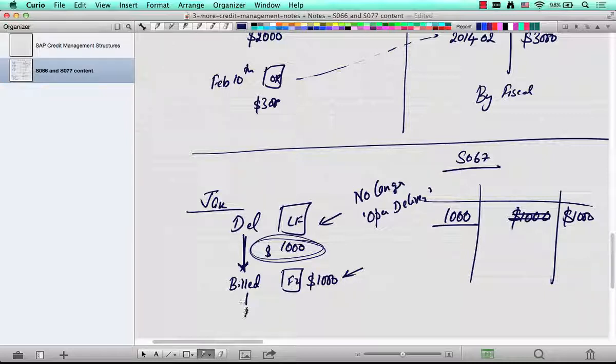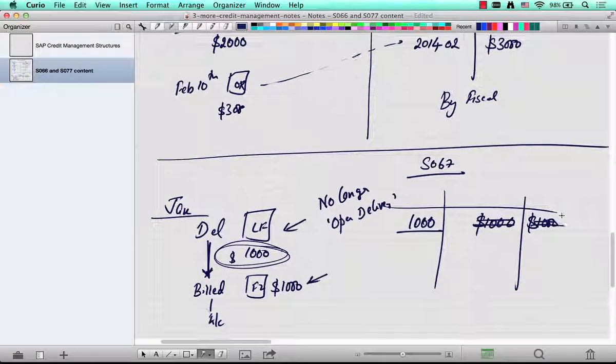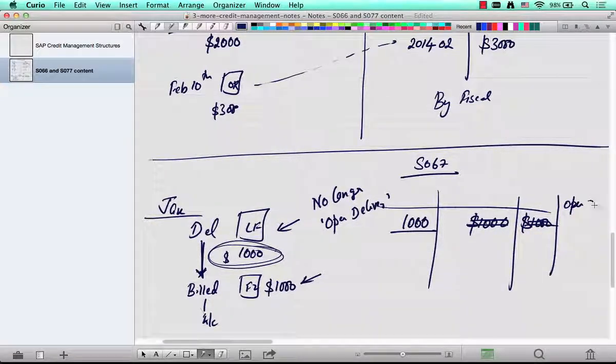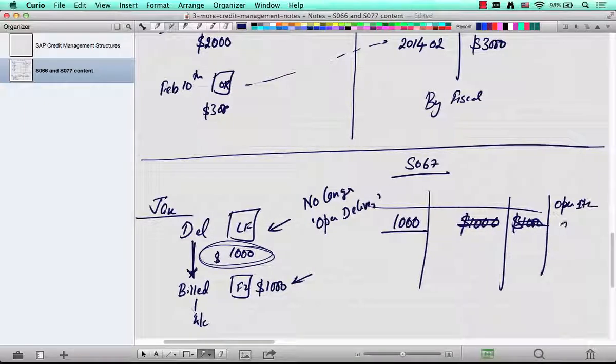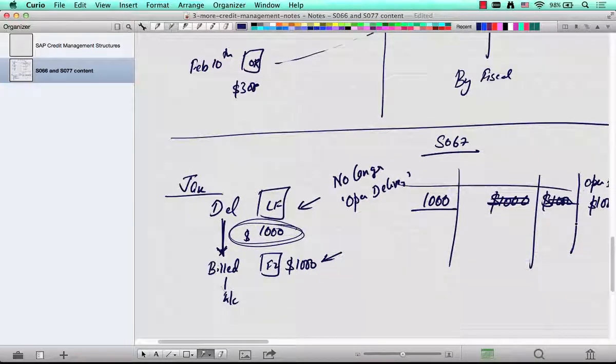Now it's an open billing. Now if it's posted to accounts, this is also removed and it becomes open items or open receivables. So this table is a little tricky. It computes open delivery value, open billing value, and open items.